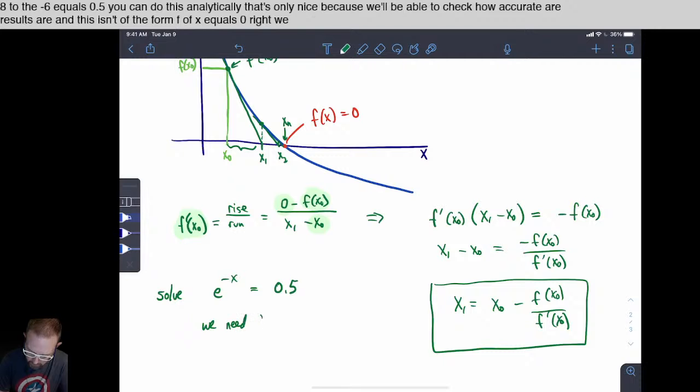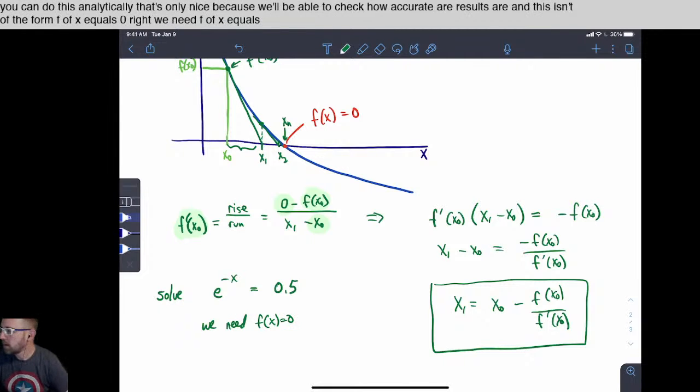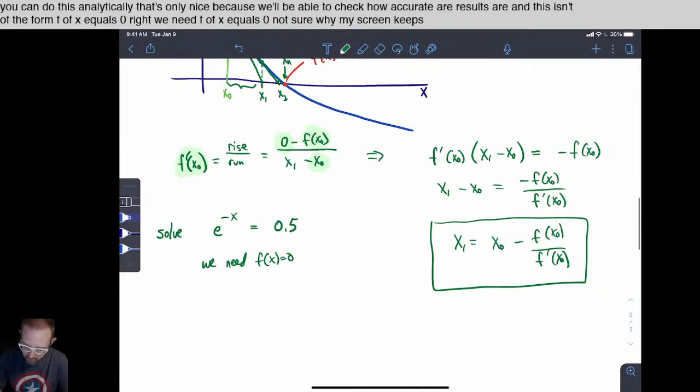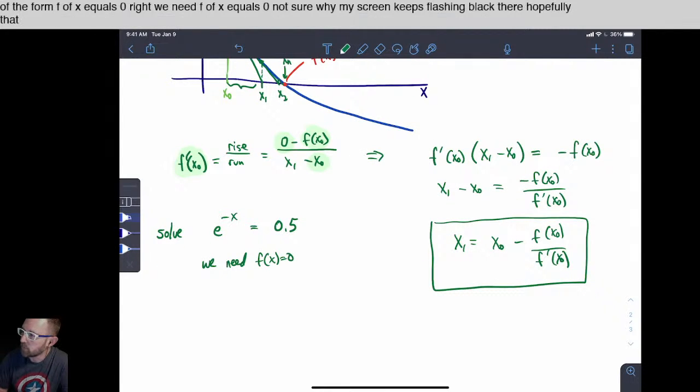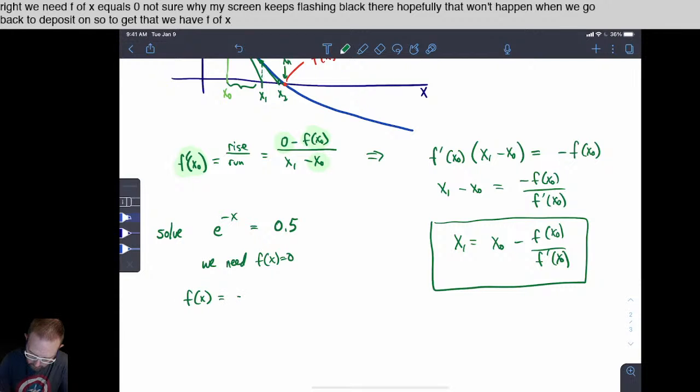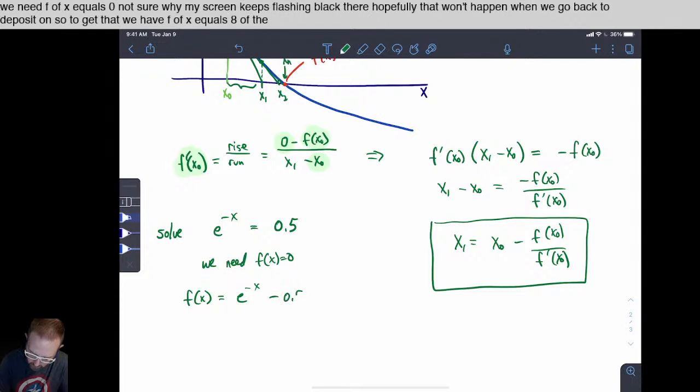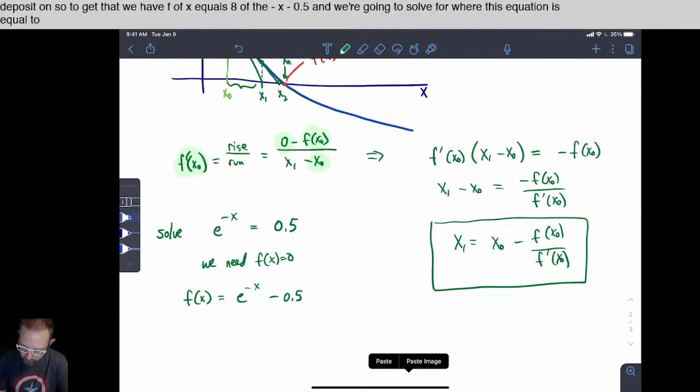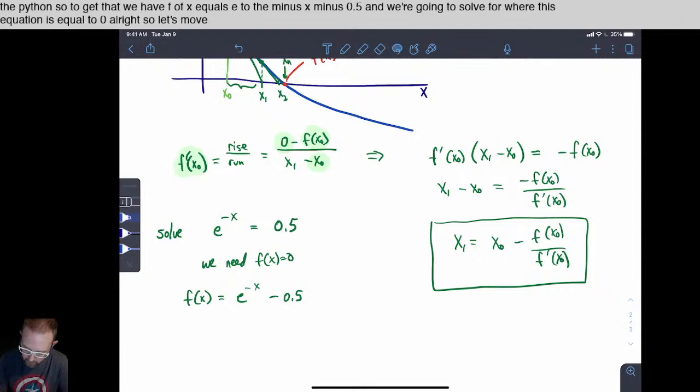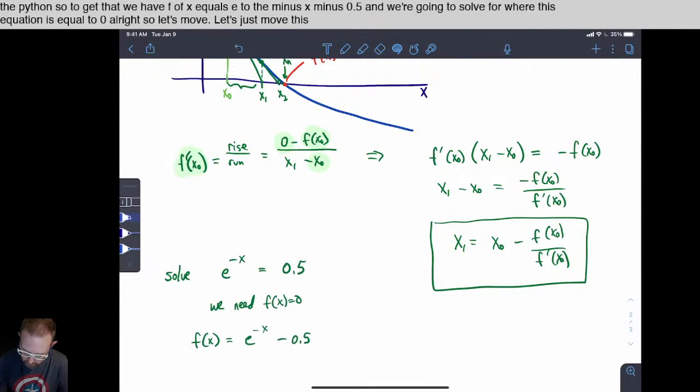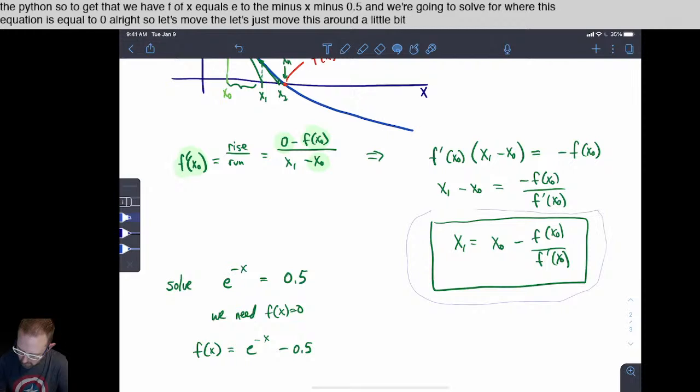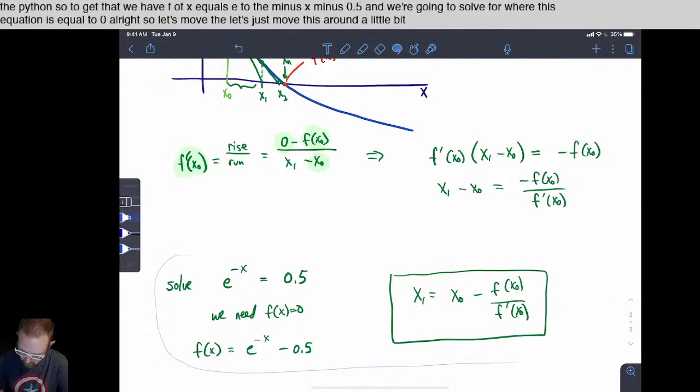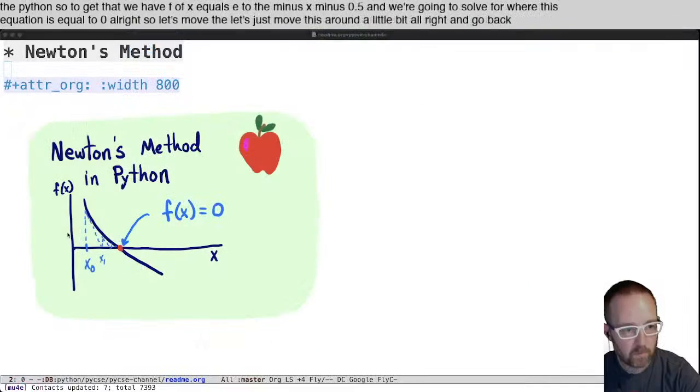Right? We need f of x equals 0. Not sure why my screen keeps flashing black there. Hopefully that won't happen when we go back to Python. So to get that we have f of x equals e to the minus x minus 0.5. And we're going to solve for where this equation is equal to zero. All right, so let's move this around a little bit. All right, and go back to how to implement this in Python.